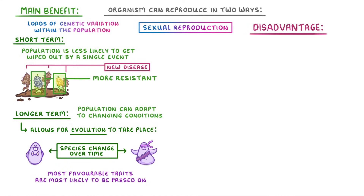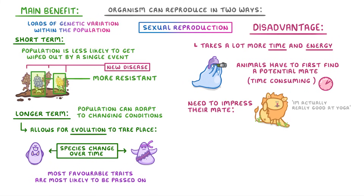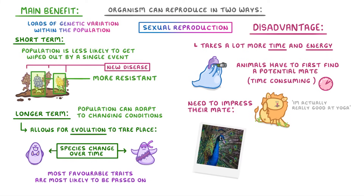The main disadvantage of sexual reproduction, though, is that it takes a lot more time and energy than asexual reproduction does. For example, animals have to first of all find their potential mate, which can be time-consuming, and then they also need to impress their mate. This is the reason why some birds have such colourful feathers — they're useful for impressing their mates, even though they don't help the bird survive at all.